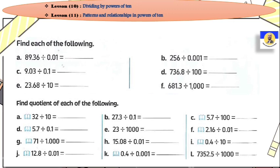هنبدأ نعمل زي ما خدنا قبل كده multiply by Powers of 10. وعرفنا إنه بنحرك الdecimal point. هنرجع نعيد الكلام بس مع divide. تعالوا نتفق على شوية حاجات. احنا كنا عارفين قبل كده لما بيجي أقول لك divide by 10، يبقى النمبر عندك بتعمل move للdecimal point back one digit.